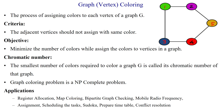Graph coloring is one of the processes to assign colors to each and every vertex available in a given graph G. A graph has a set of edges and vertices. Each and every vertex should be assigned some color. One of the criteria is that adjacent vertices should not have the same color.